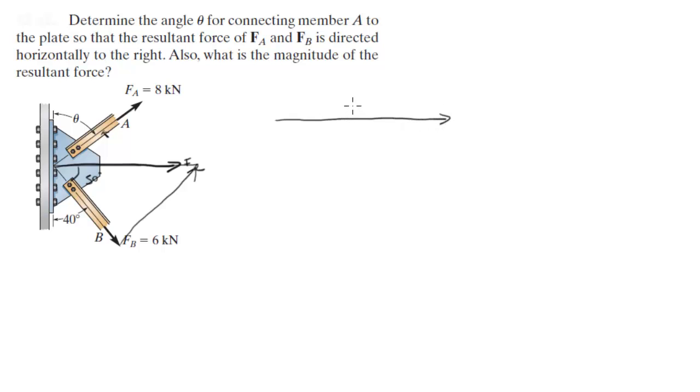So let me redraw this triangle over here. You got the resultant force which goes straight to the right, you got B which you know is 6 kN, and you got A which you know is 8 kN, and you got this angle that you know is 50 degrees.